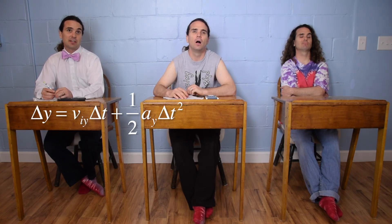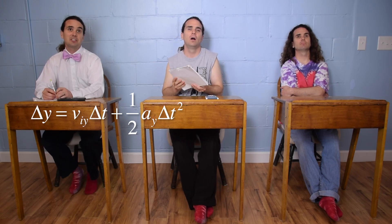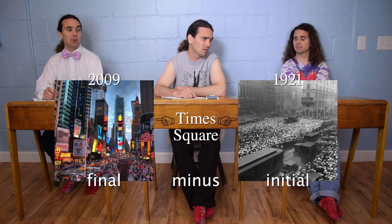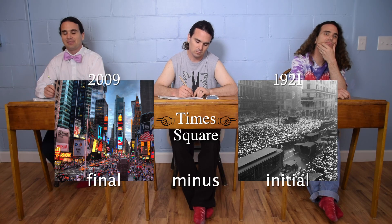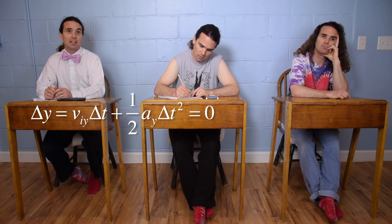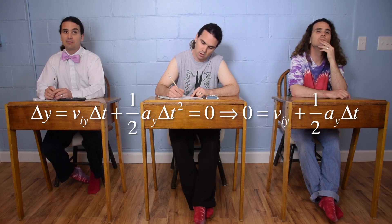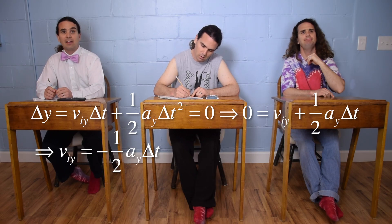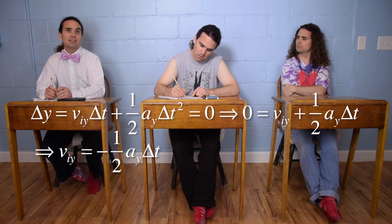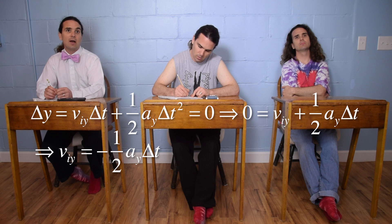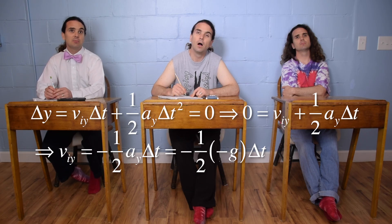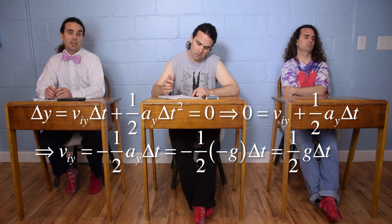We can use the uniformly accelerated motion equation: displacement in the y direction equals the initial velocity in the y direction times the change in time, plus one half times the acceleration in the y direction times the change in time squared. The displacement in the y direction is zero, so the whole equation equals zero. We can divide the equation by the change in time to get: zero equals velocity initial in the y direction plus one half times the acceleration in the y direction times the change in time. Subtract one half times the acceleration in the y direction times the change in time from both sides, and we get: velocity initial in the y direction equals negative one half times the acceleration in the y direction times the change in time. Substituting negative g for the acceleration in the y direction, the negatives cancel, leaving one half times the acceleration due to gravity times the change in time.